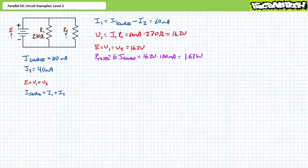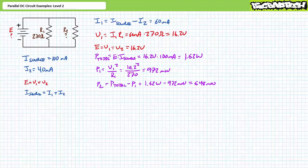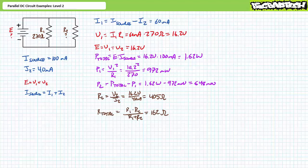Total power supplied to the system equals supply voltage times source current, yielding 1.62 watts. The power dissipated by R1 equals V1 squared divided by R1, yielding 972 milliwatts. Since total power equals P1 plus P2, solving for P2 gives P2 equals P_total minus P1, yielding 648 milliwatts. Applying Ohm's law, R2 equals V2 divided by I2, yielding 405 ohms. As a check, the total resistance of R1 and R2 in parallel is 162 ohms, and solving for source current yields 100 milliamps — confirming our answers are correct.